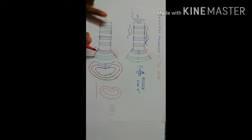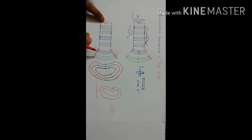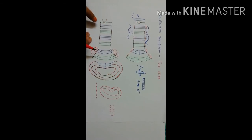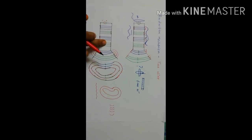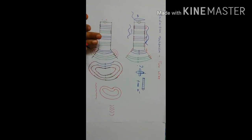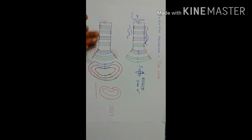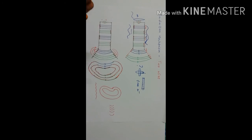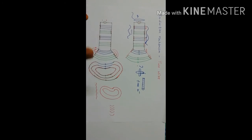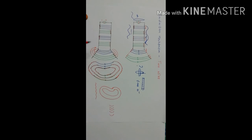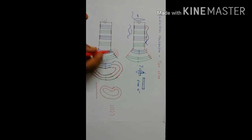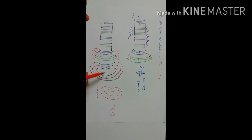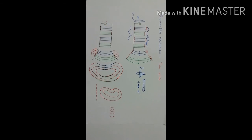The source is essential initially for generation of the field. Once the field disturbance is created in the conductors, automatically for a certain amount of time this process will continuously happen. This is the concept of radiation mechanism for a two-wire antenna. Thanks for watching.